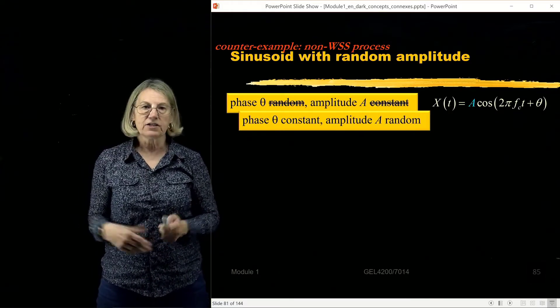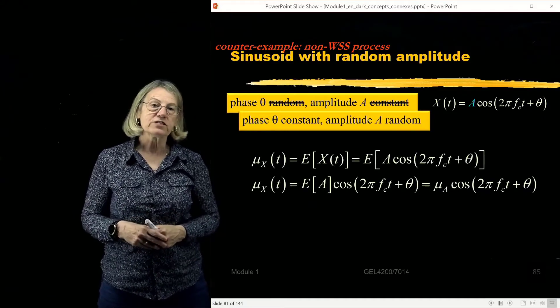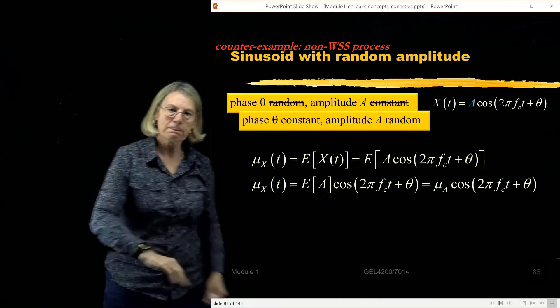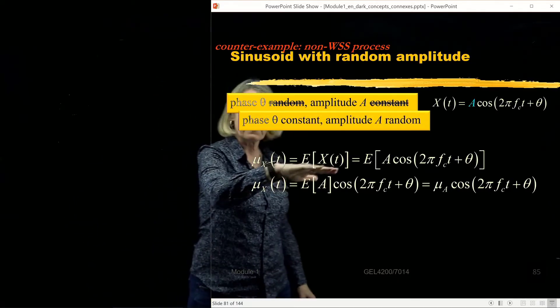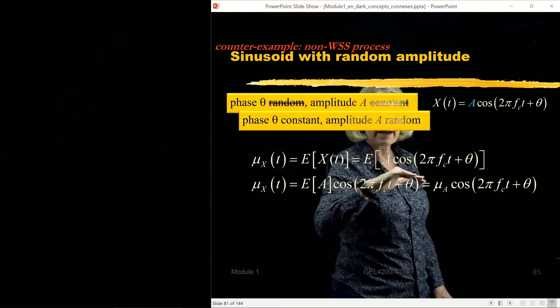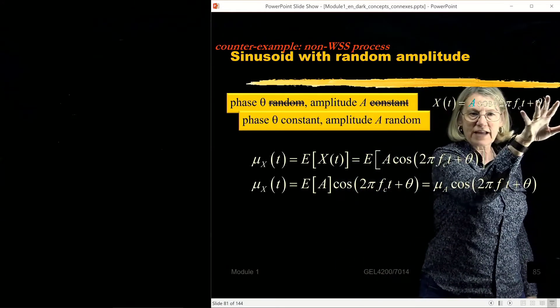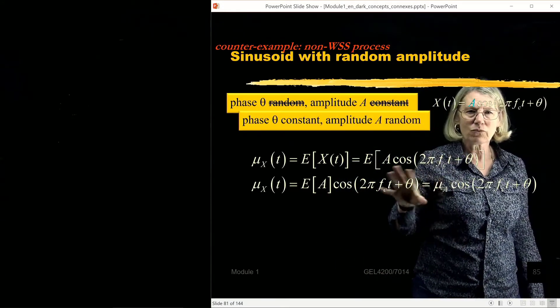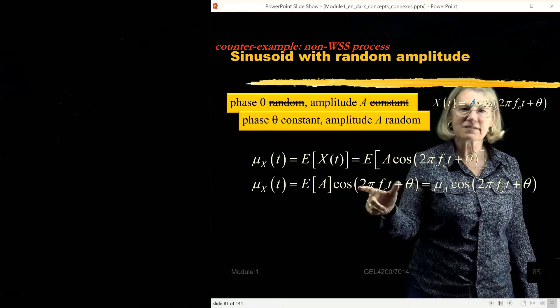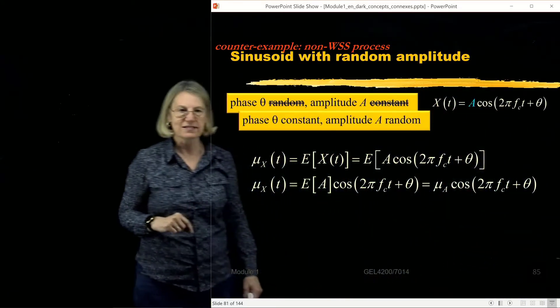So in this newly generated example, let's find out how we're going to establish that it's not wide sense stationary. So the first step, find the expected value. The expected value is just the expected value of x(t). We have here the expected value of the product, A, times a cosine. We know that in the cosine, there's nothing that's random, right? This is all not random. The only part that's random is A. So really it's the expected value of A, the only part that's random, times this deterministic value, which is the cosine of 2π fc plus t plus θ.